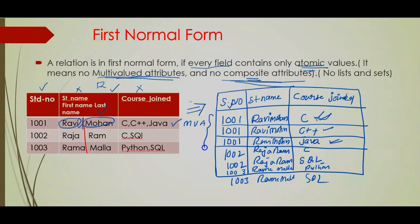However, look at this — the converted table can lead to redundancy again. So First Normal Form alone cannot eliminate redundancy. We need to go further to Second Normal Form. Once you are clear about the First Normal Form, in the next video we are going to learn Second Normal Form with a proper example.